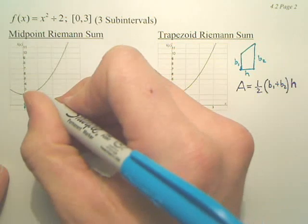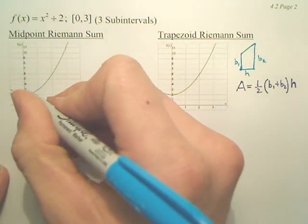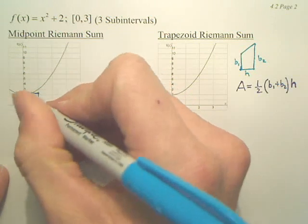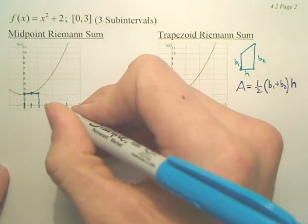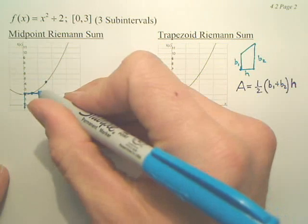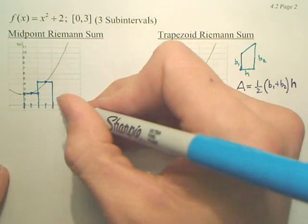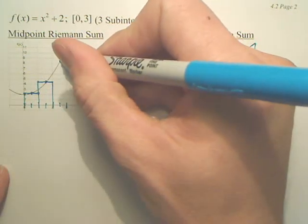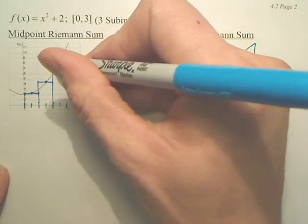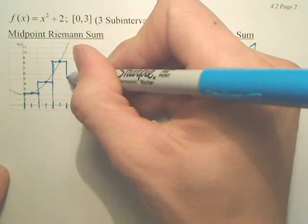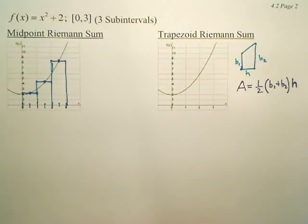So from here, we go straight up and we make a rectangle. From here, you go straight up, you make a rectangle. From here, you go straight up, you make a rectangle. Can you tell how much more accurate this is? Midpoint tends to be a lot more accurate, but it's also a lot more annoying because sometimes you get fractions you have to deal with.